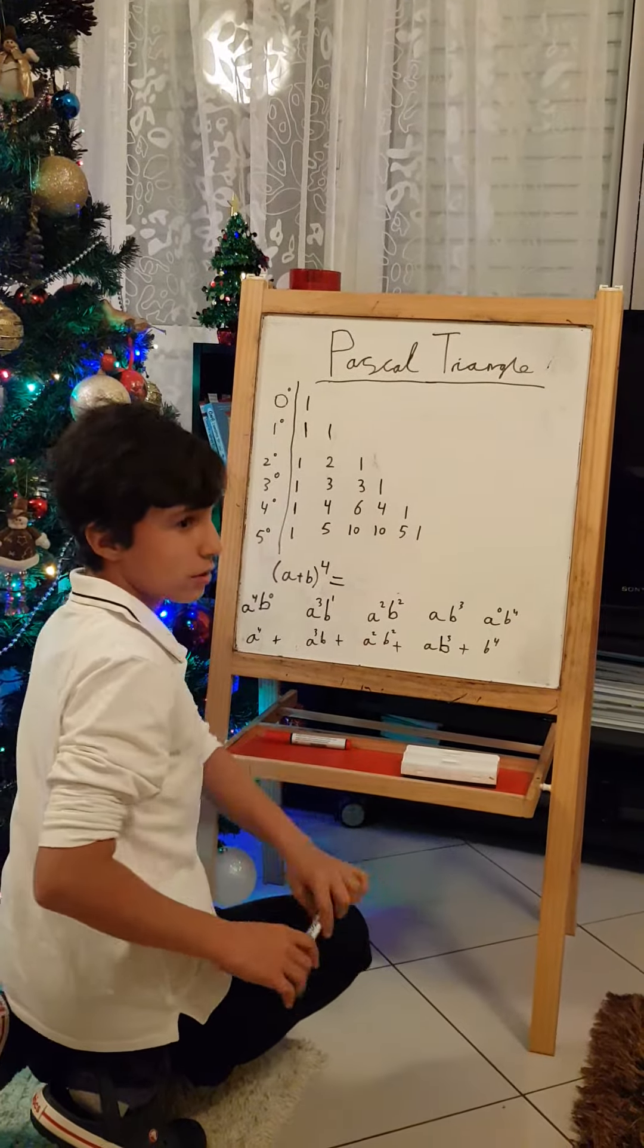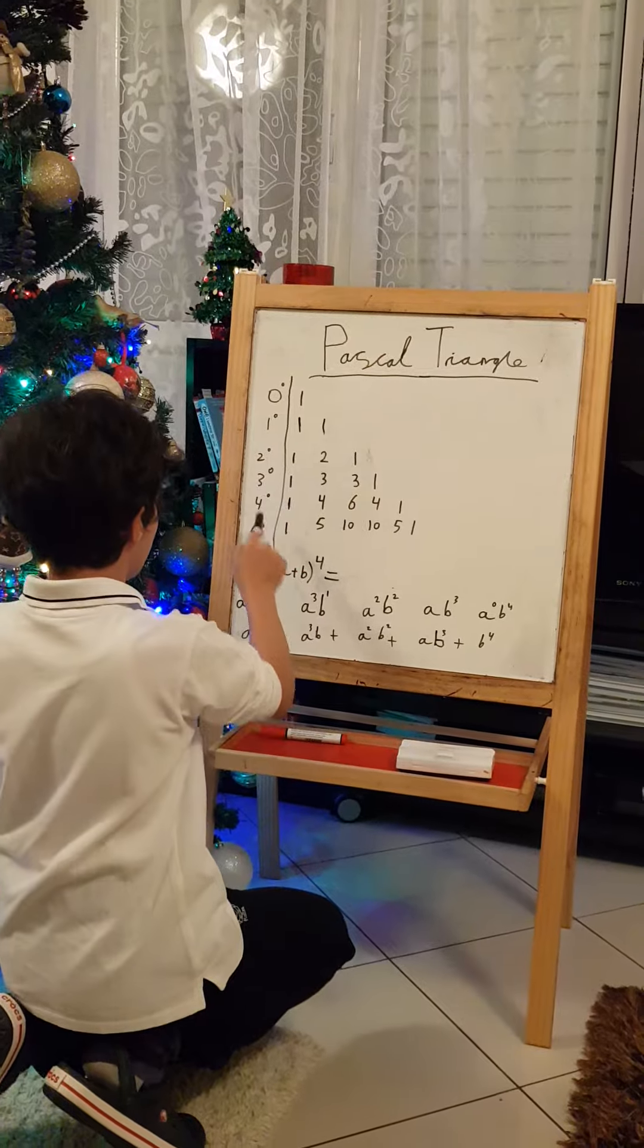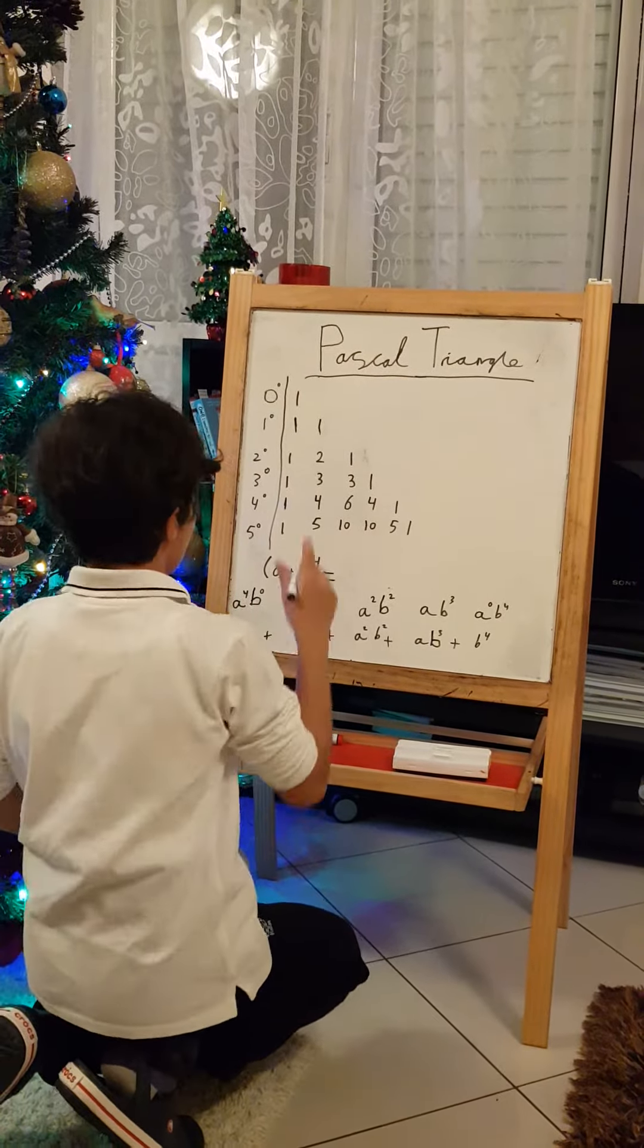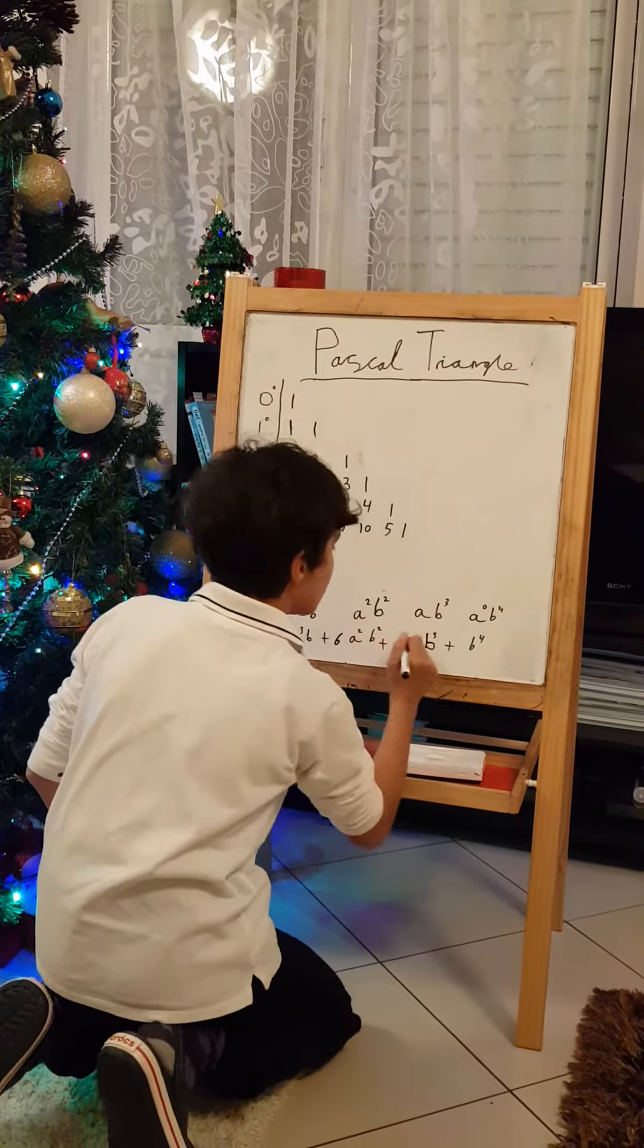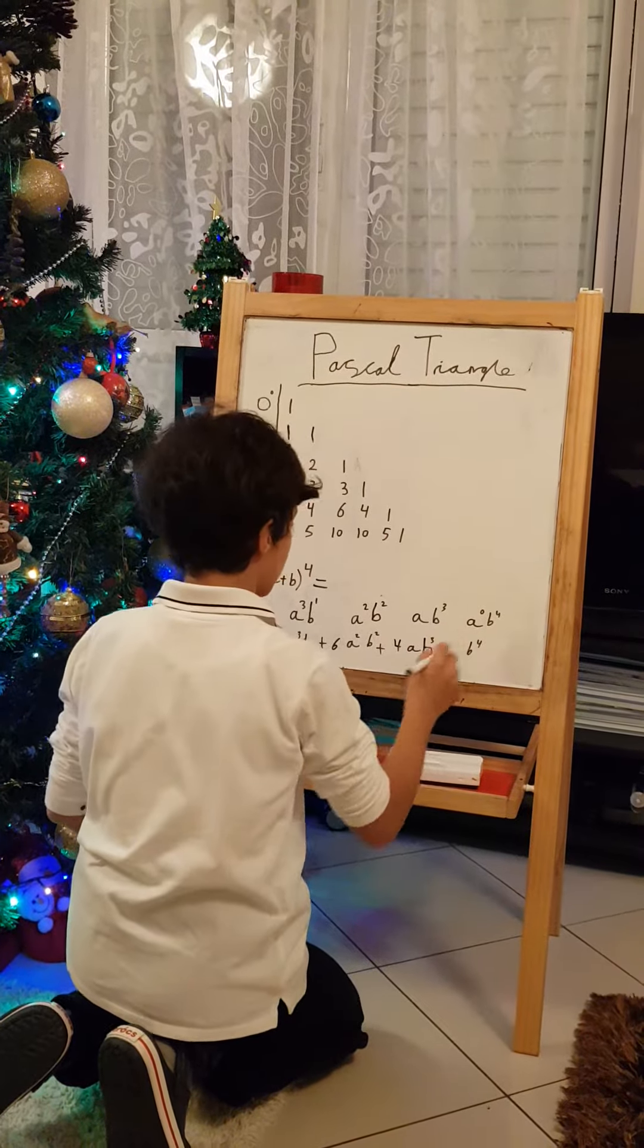Now, the coefficients. To find them, we go back to the Pascal triangle. Where's the fourth degree? Here. So, 1 is here, but we don't use the derivative. And 4, we drop it out here. And then 6, we put it there. And then 4, we put it here. And 1, B^4 is here.